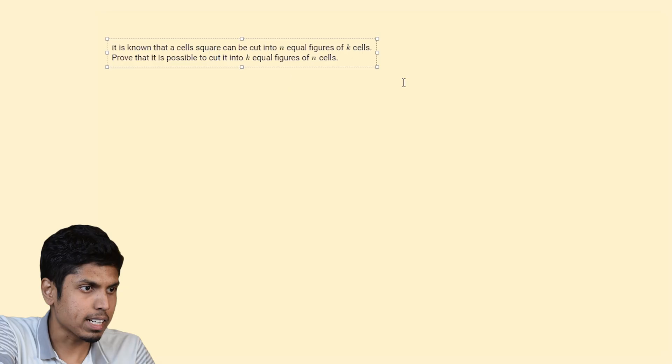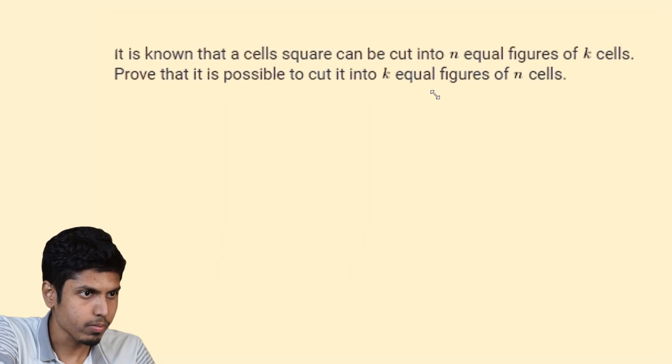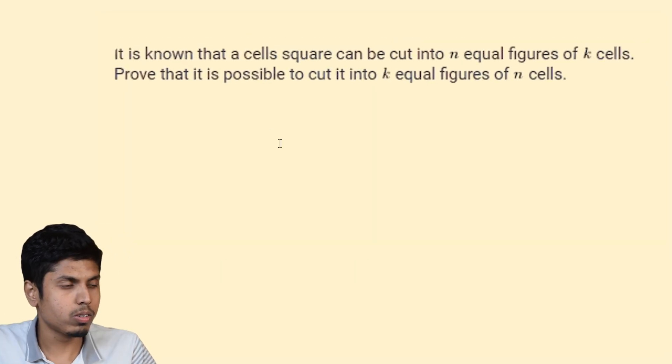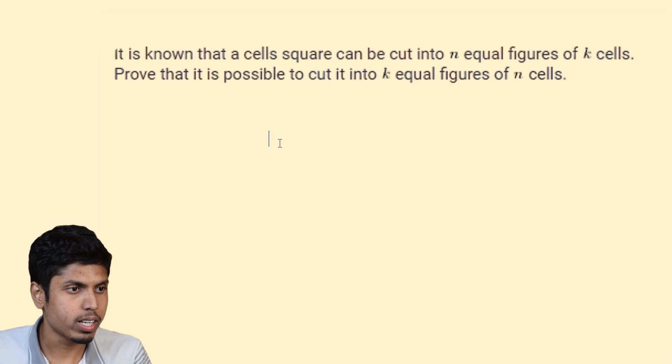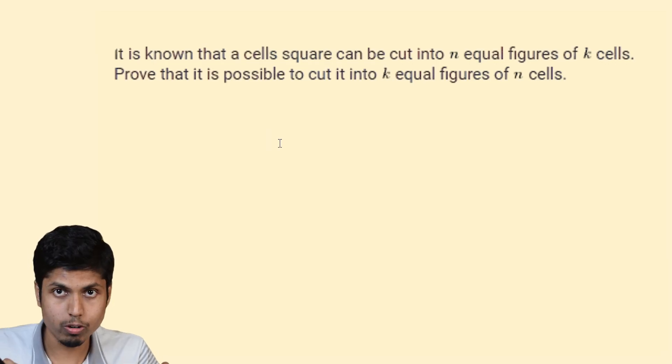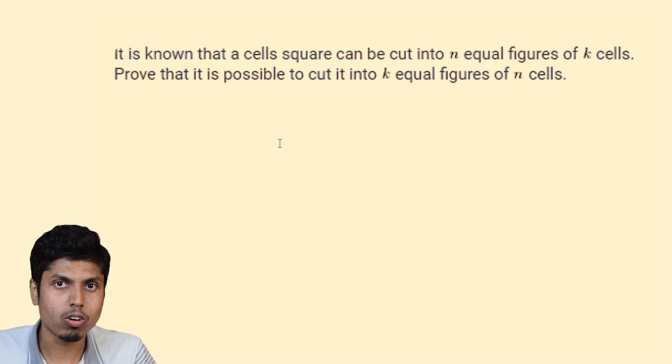Here is the actual question. A square grid is dissected into n equal figures with k cells each. Let's prove that n and k must be divisors of the square of the side length, or the number of unit squares along the side of the square grid.